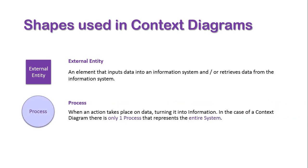Next, we have a process. When an action takes place on the data, turning it into information. In the case of a context diagram, there is only one process that represents the entire system.